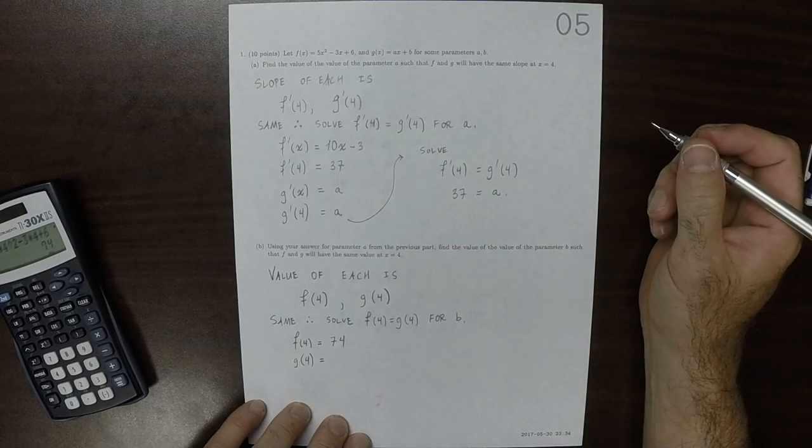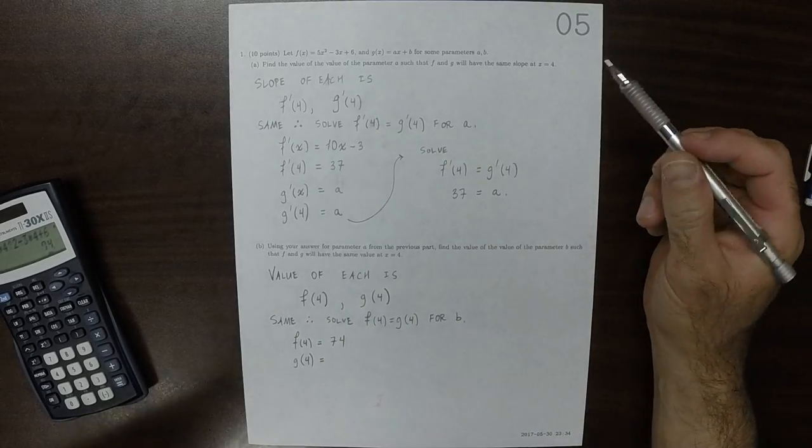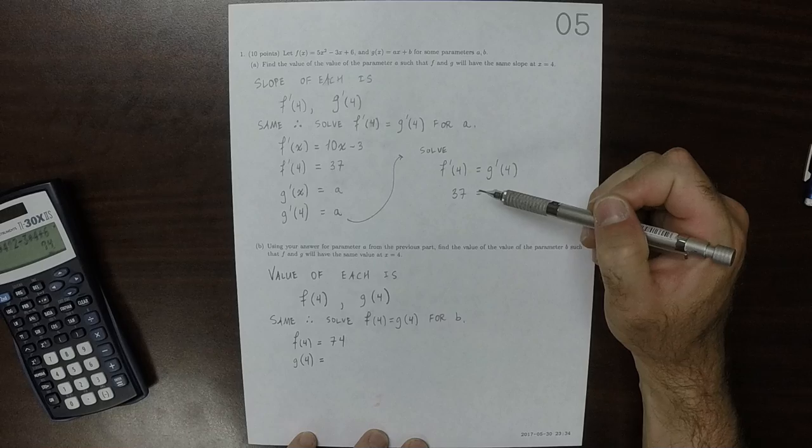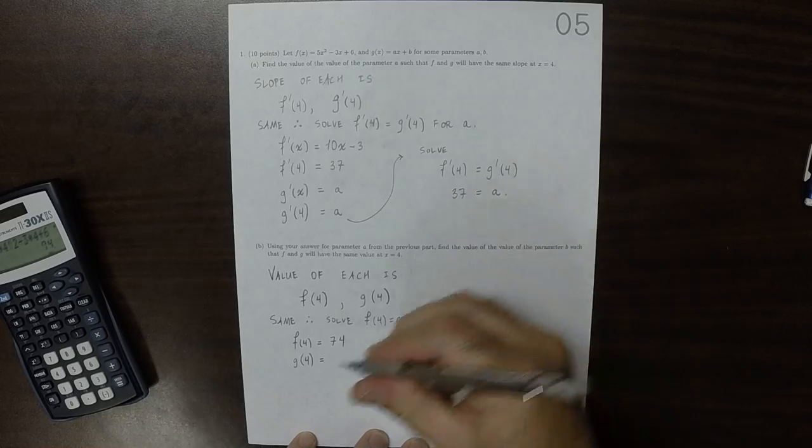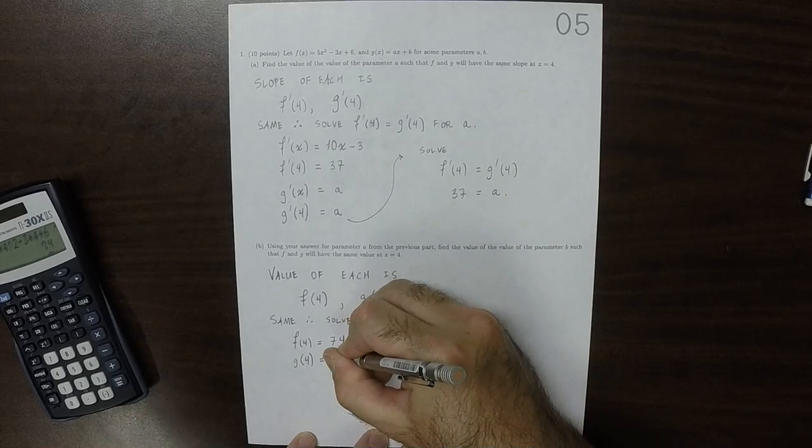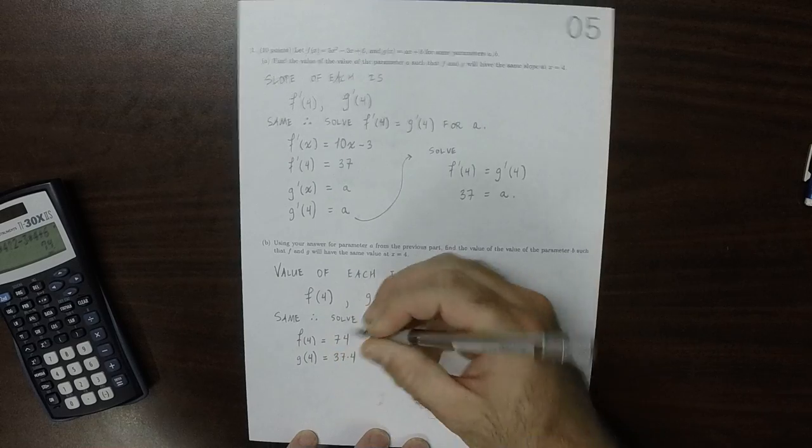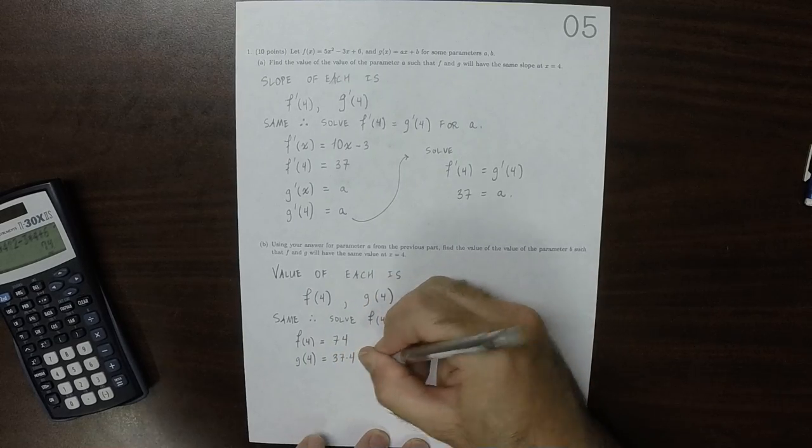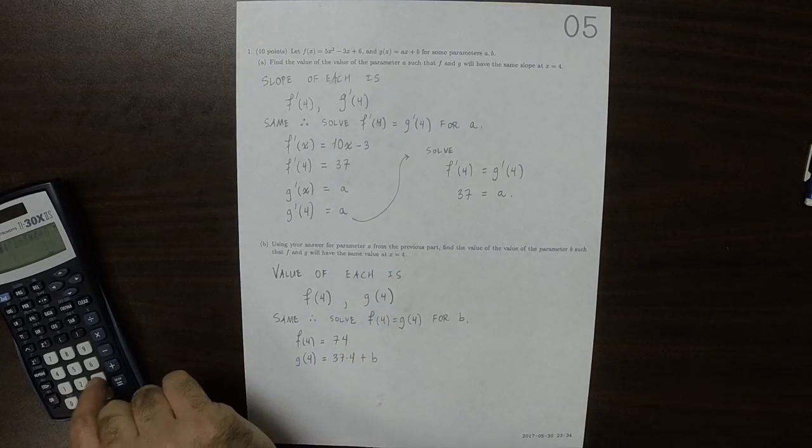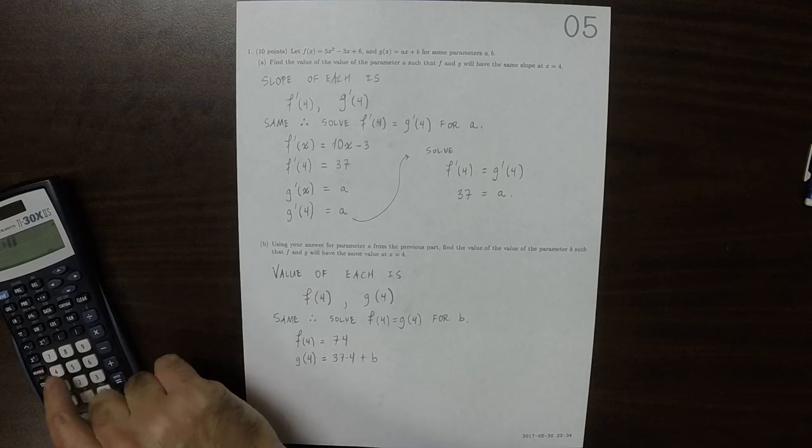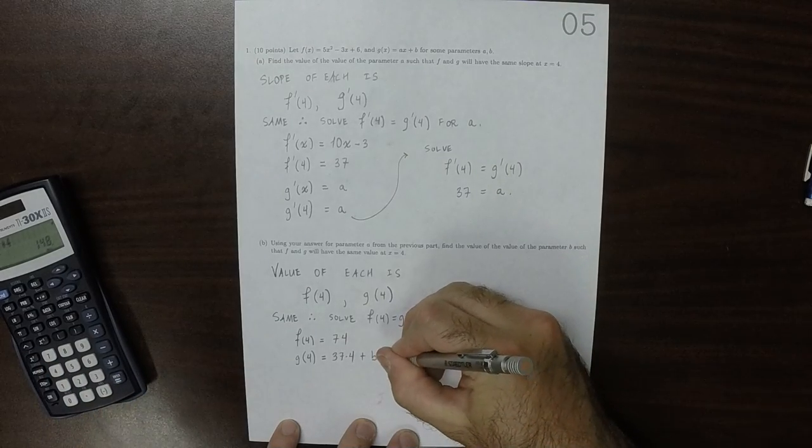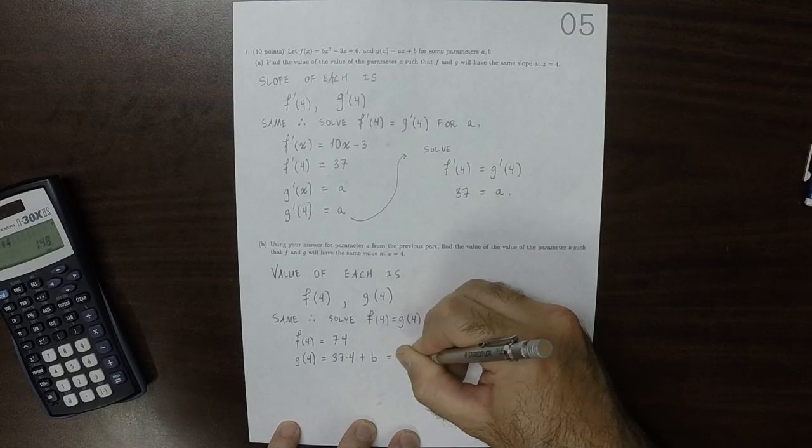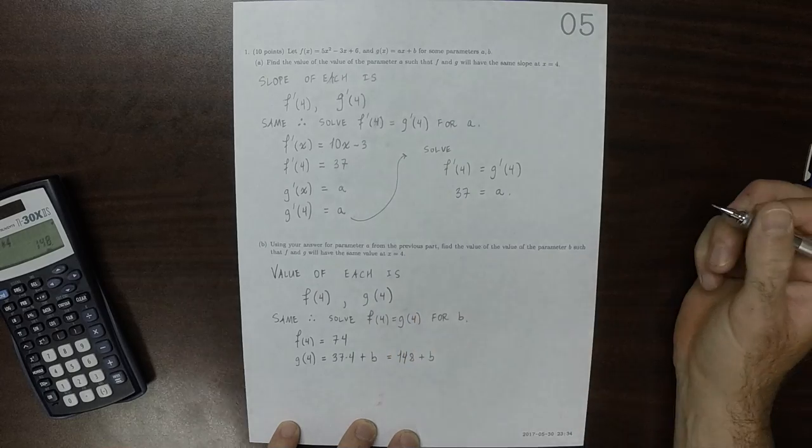And g evaluated at 4. Well, because we figured out what parameter a is, that would be 37 times 4 and then plus b. But then 37 times 4 is 148. So this would be 148 plus b.